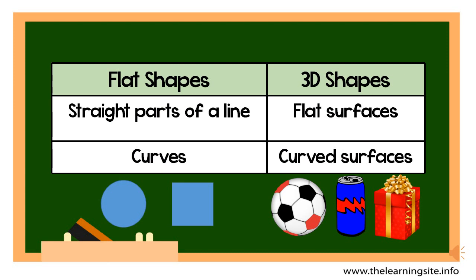This table helps you remember what makes up flat shapes and what makes up 3D shapes. Straight parts of lines and curves make flat shapes like the ones you draw on paper. Think about a square or a circle. You can't hold a square or a circle. Whereas 3D shapes like things that are in real life are made of flat surfaces and curved surfaces.